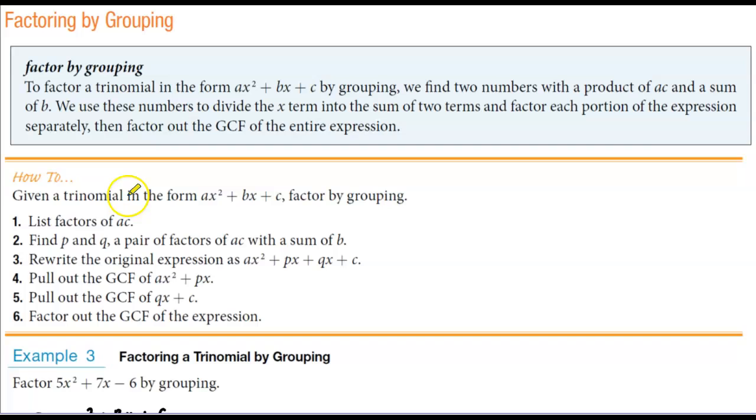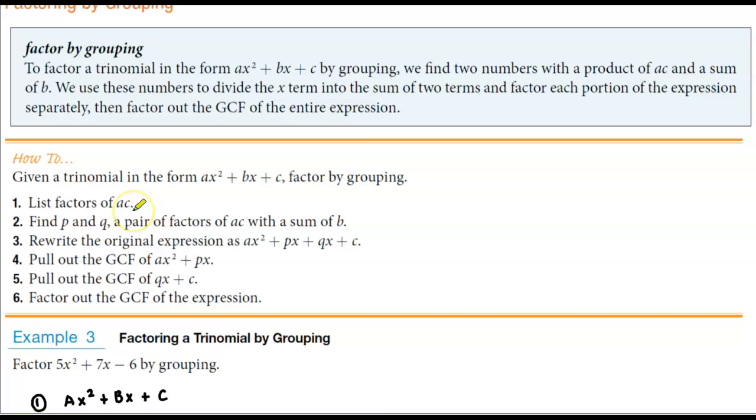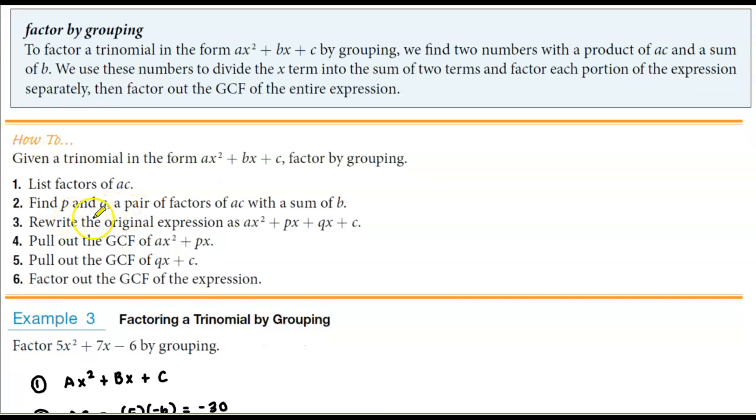When factoring by grouping, first we need a list of factors of a and c, and then we find p and q as a pair of factors of ac with the sum of the middle term b.